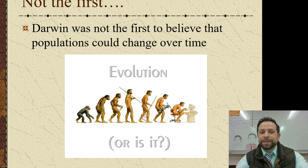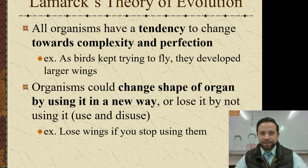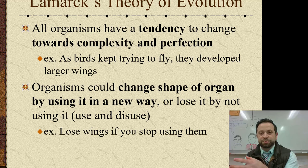Darwin was not the first person to believe that populations can actually change over time, even though we know Darwin as the father of evolution. Lamarck was actually the first guy that came up with the theory of evolution, and his theory was that all organisms have this tendency to always move towards perfection or to evolve towards perfection.